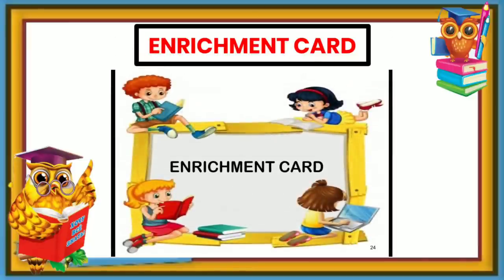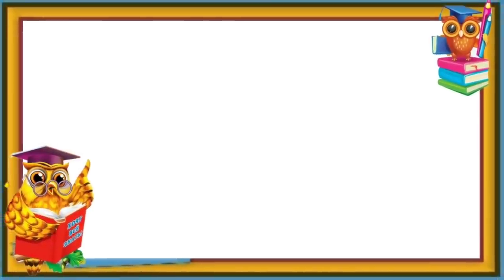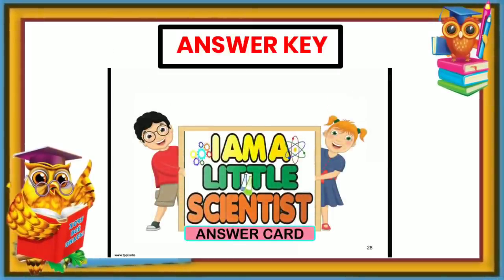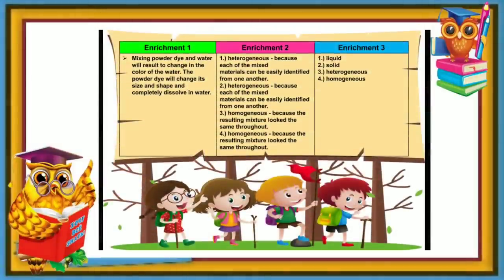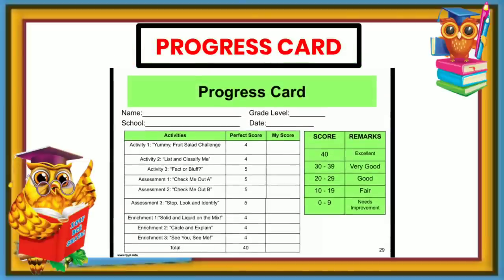Next is the enrichment card — these are additional exercises for the students to extend their knowledge. It can be puzzles or any challenging activity for them. And of course there should be an answer key. Progress card — this is where you can see the student's performance: excellent, very good, good, fair, or needs improvement.